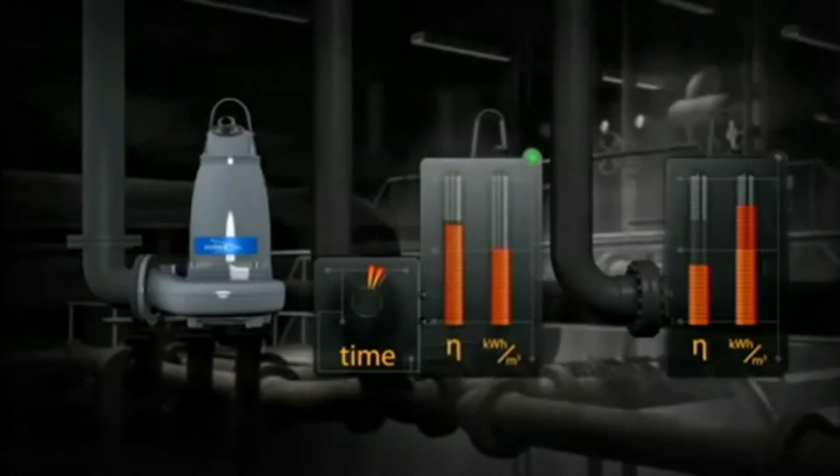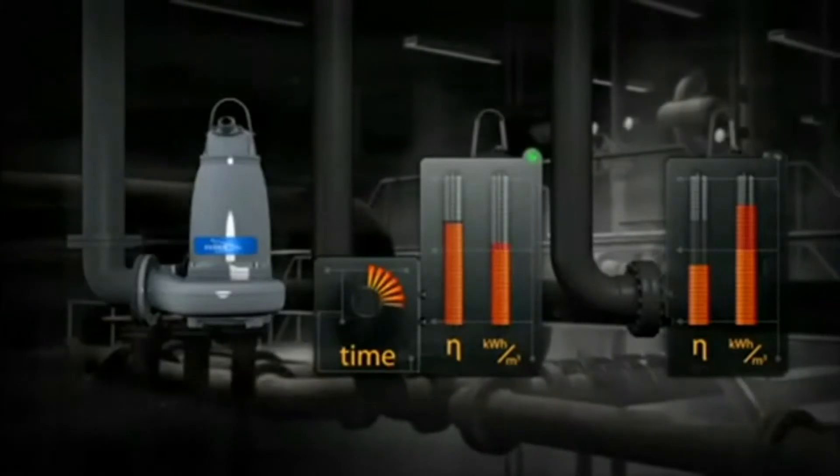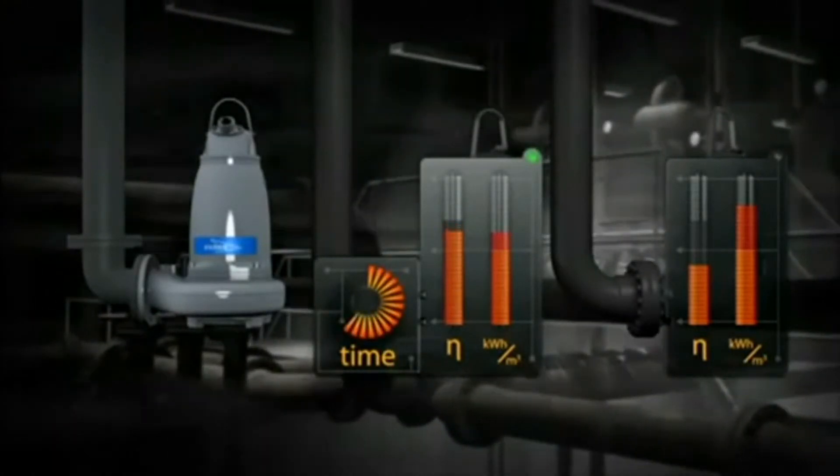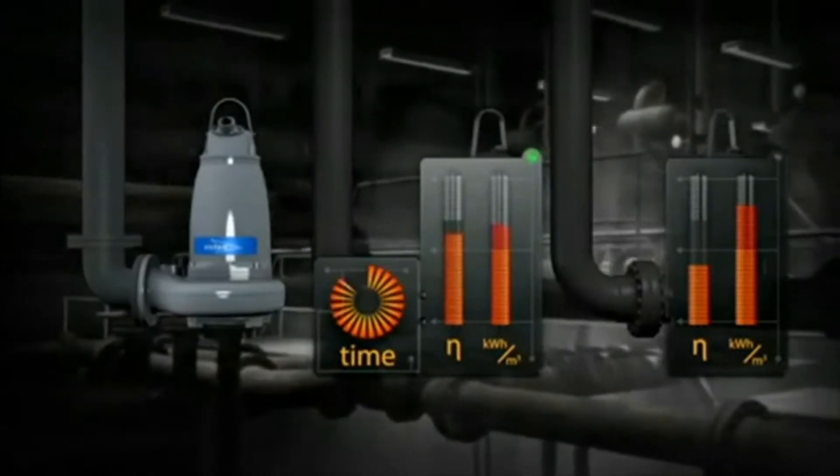Clogging also reduces the efficiency of a conventional wastewater pump that's run intermittently. Temporary efficiency gains may be achieved by back flushing the pump.